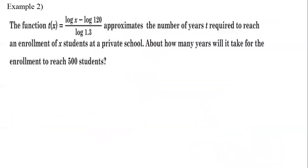Okay, and our second example, we're going to apply it. So here we came up with our function. And our function is t of x equals log x minus log 120 divided by log 1.3. And we want to approximate the number of years required to reach an enrollment of x students at a private school. About how many years will it take for the enrollment to reach 500 students?